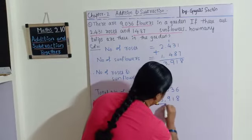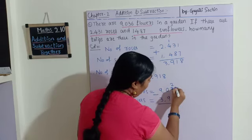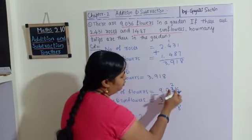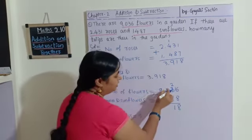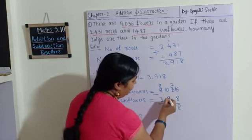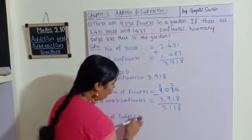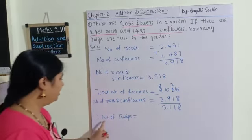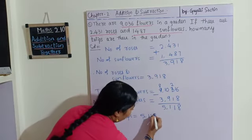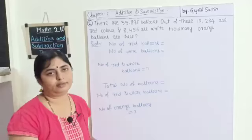Let's start subtracting 9036 minus 3918. In the units place: 6 minus 8 — I cannot subtract, so I borrow. It becomes 16; 16 minus 8 is 8. Then 2 minus 1 is 1. In the tens place: 0 minus 9 — I borrow, it becomes 10; 10 minus 9 is 1. Then 8 minus 3 is 5. Therefore, the number of tulips is 5118.